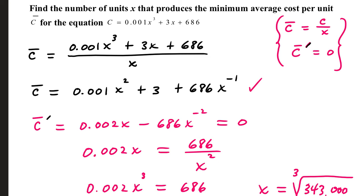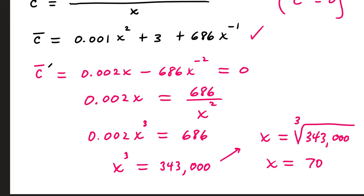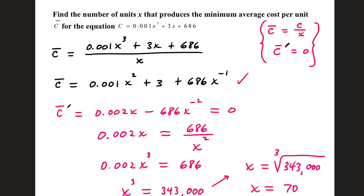Multiplying both sides by the denominator x squared. We already have an x here, so x times x squared makes x cubed. Divide both sides by 0.002, that is 343,000. x cubed is equal to this number. To get rid of the cube, or make it just x, we take the cube root of 343,000, and that tells us that 70 units will minimize the average cost.